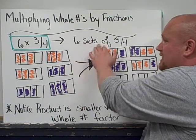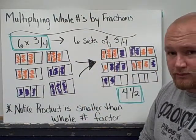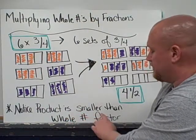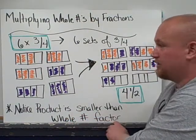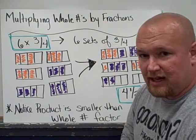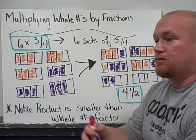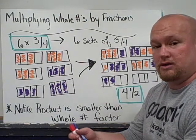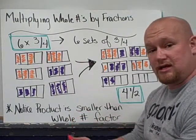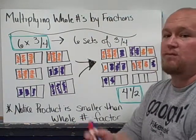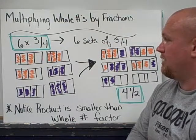Again, that's six sets of three-fourths. I want you to notice that the product is smaller than the whole number factor we started with. We're used to multiplying and things getting bigger. When you start to multiply by fractions, you're multiplying by a fractional part. If six times one was six, then multiplying six by anything less than one is going to be smaller in comparison.